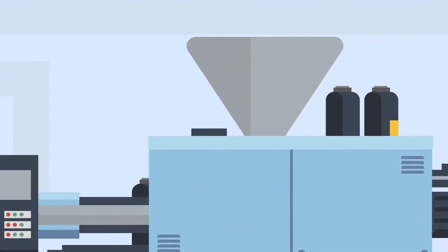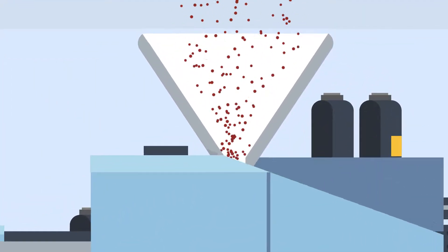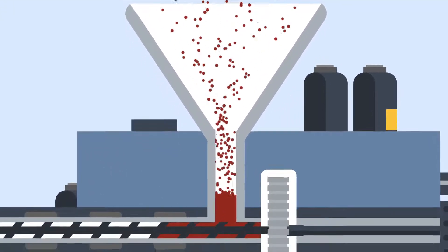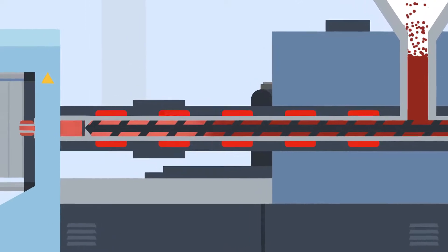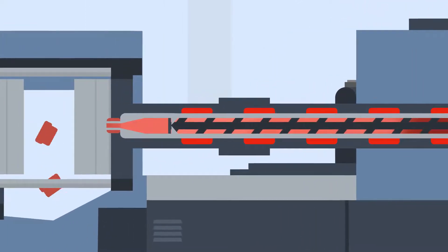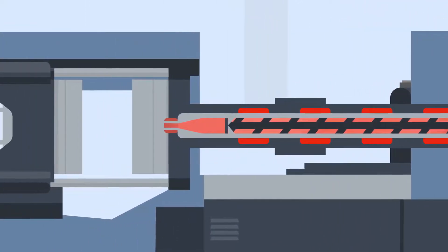First, raw plastic pellets are poured into the hopper at the top of the machine. This can be one type or a combination of different plastics. The pellets are then heated within a temperature-controlled cylinder, called the machine barrel, until it is molten.